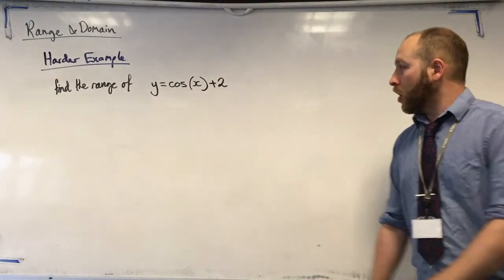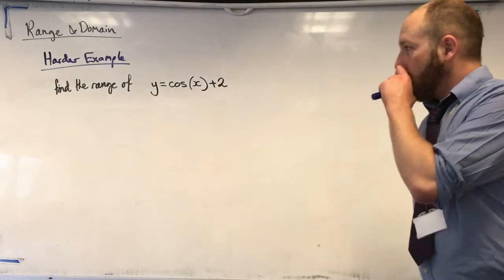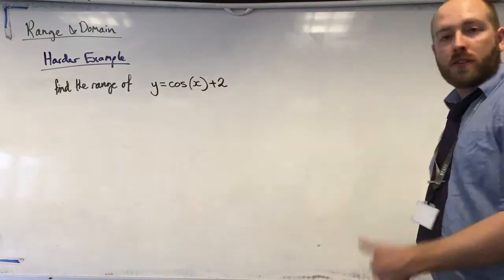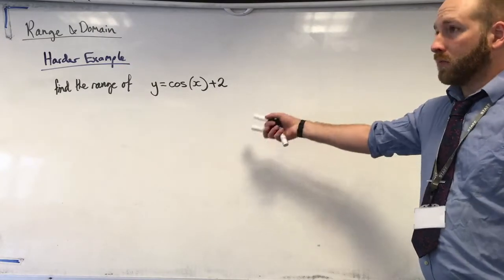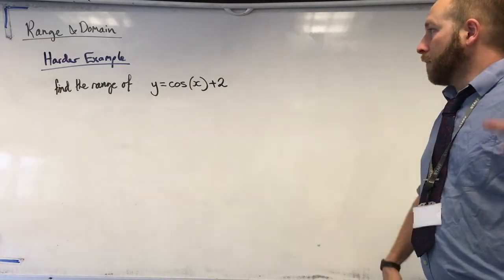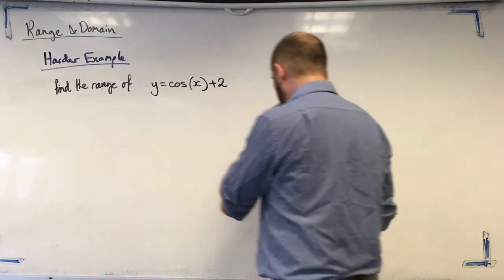So, a harder example, we're going to try and find the range of cos x plus 2. It's the same three steps as last time. So, step 1, sketch it. Step 2, apply the domain. If you haven't been given one, we'll come to that in a minute. And step 3, find what y values are allowed. So, sketching this one.